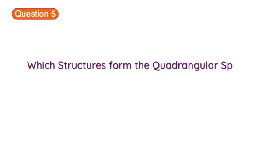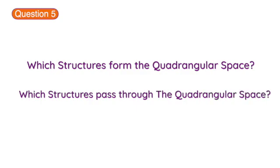Question 5. What are the boundaries of the quadrangular space in the upper limb? And which structures pass through it?